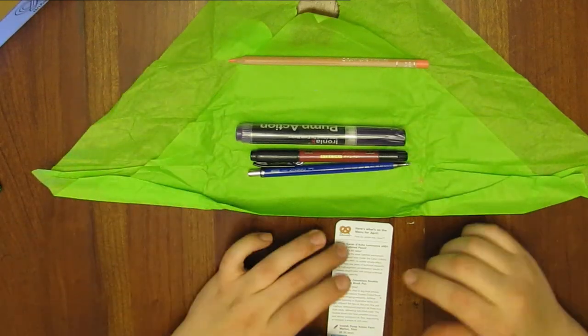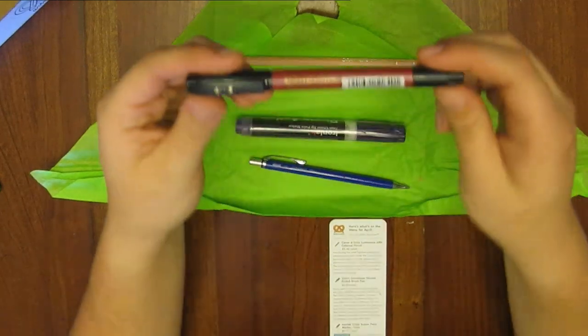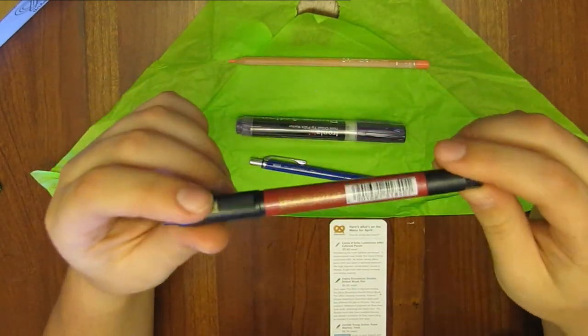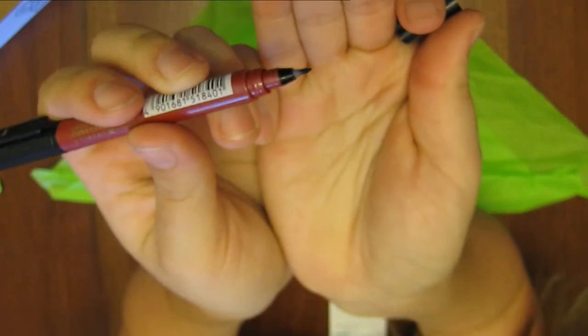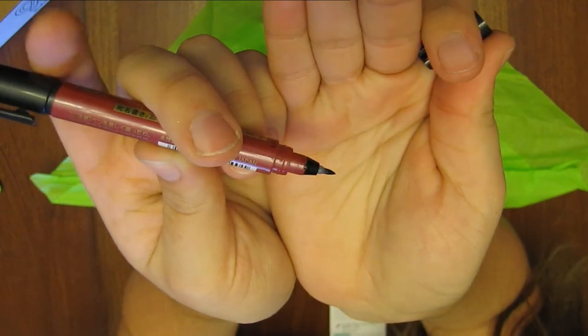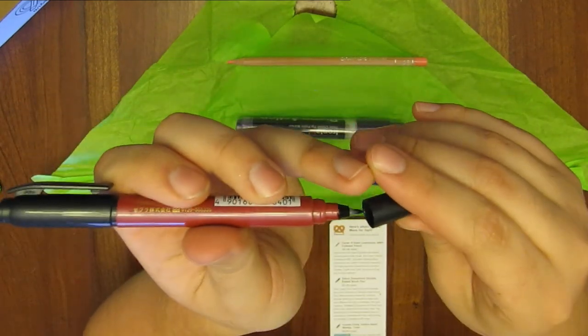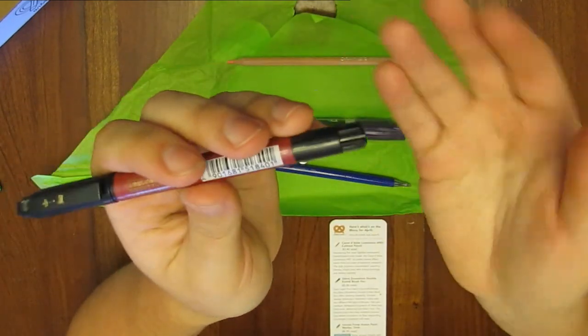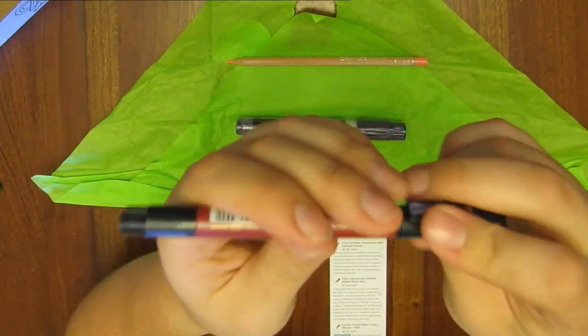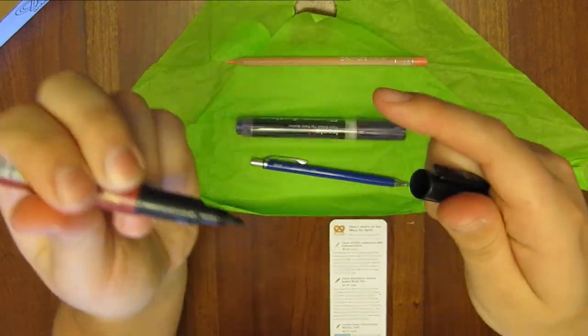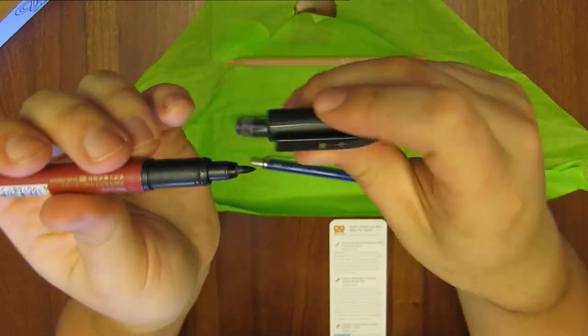So this pink Caran D'Ache Luminance Colored Pencil. Here's the Zebra Zensations Double Ended Brush Pen, so it's got these same plasticky nibs that are like, they're not spongy, but they're not plastic either, they're slightly flexible, but it's not like a Copic marker nib. I don't know how to describe it, they're really interesting to draw with, and I like them a lot. So I am kind of excited about this one, this should be interesting.